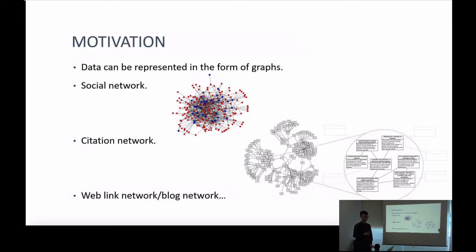In real life applications, sometimes data can be modeled as a graph. Consider the social network, where each node corresponds to a person, and if two persons are friends, there is a link between them. We can also regard color as gender — red corresponds to male and blue to female. In a citation network, each node corresponds to an academic paper, and if one paper cites another, there is a link between them. Each paper also has content such as title, abstract, and other text. We can also generate other networks, like web link networks or knowledge graphs.